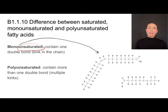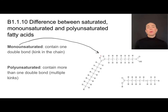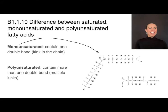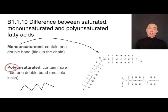A monounsaturated fatty acid has one double bond somewhere in the chain — mono means one. If you see something with many kinks in the chain, you'd want to think polyunsaturated — meaning many double bonds, or more than one double bond, in the chain.